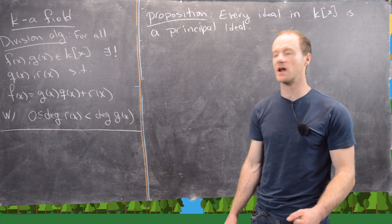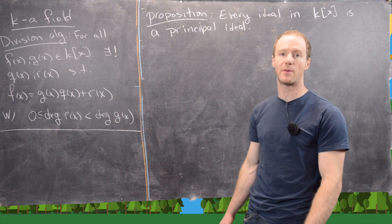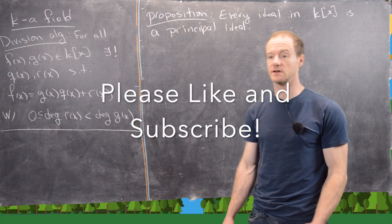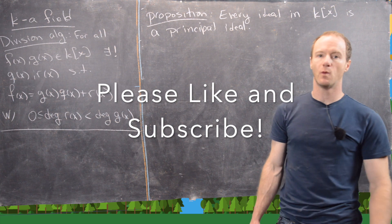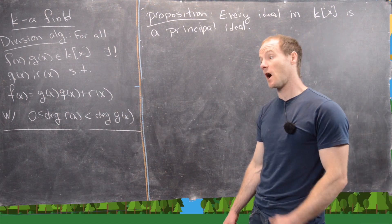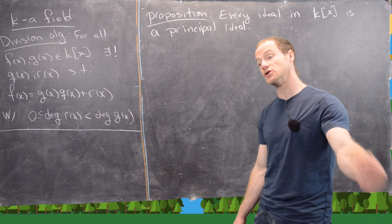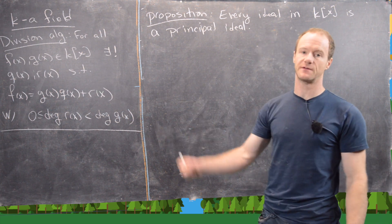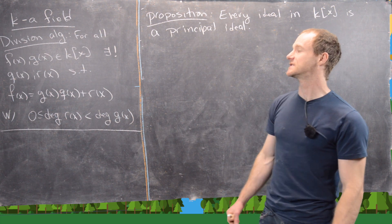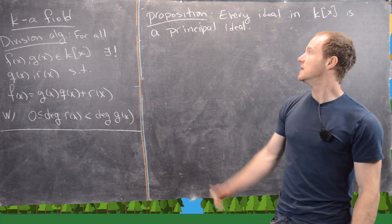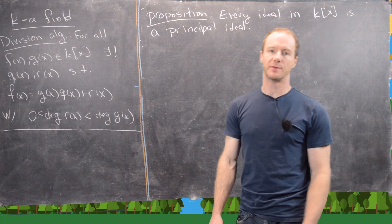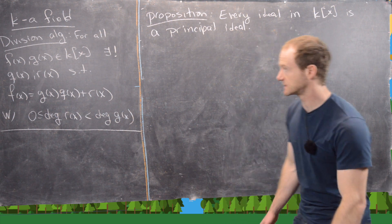We've been proving a ton of results about polynomial rings over fields, and we've got one more that we want to prove before we do some examples of constructing new fields out of these polynomial rings over fields. And that is this result about ideals of polynomial rings over fields.